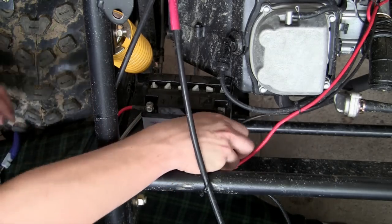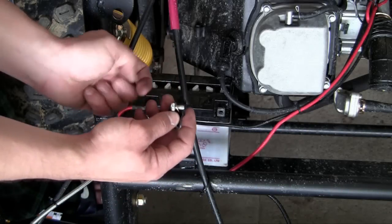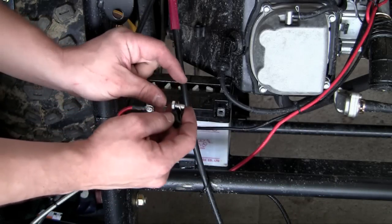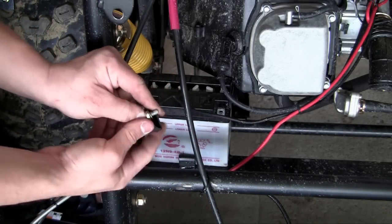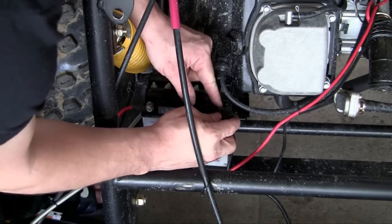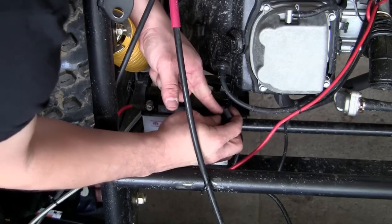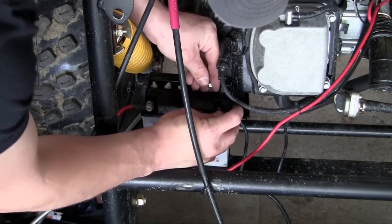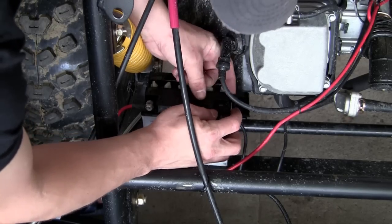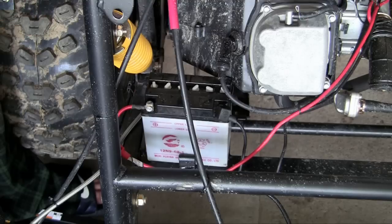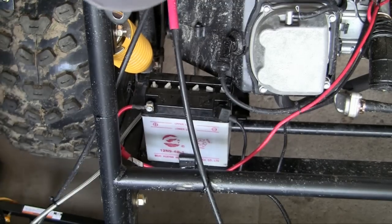So now let's go ahead and do the negative, and the order that you probably want to put these on are bolt, battery cable, battery terminal, and then your nut. So just remember: bolt, cable, battery, nut. And of course this is probably going to be a pain too to screw in, and I lost my screwdriver. Here we go.